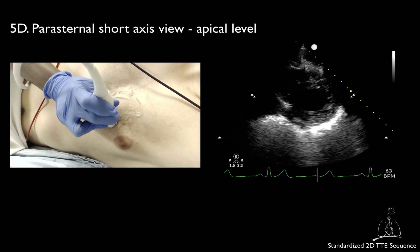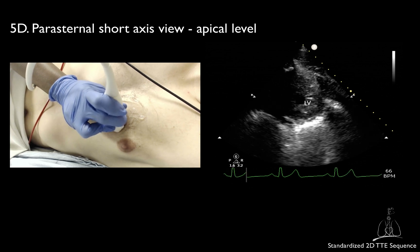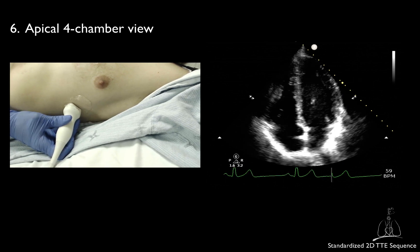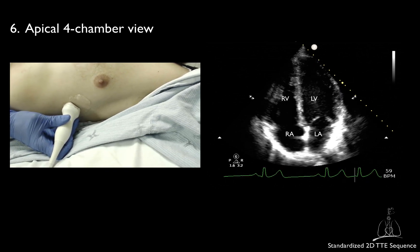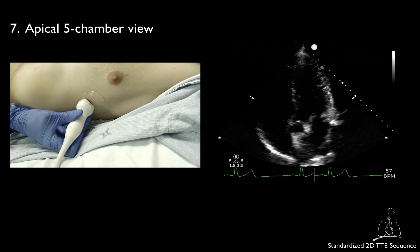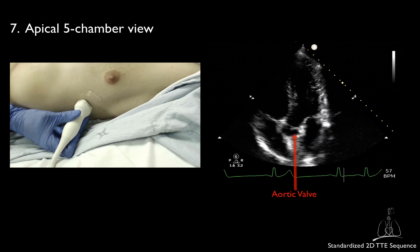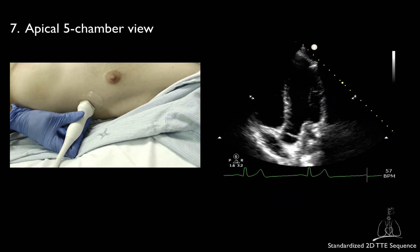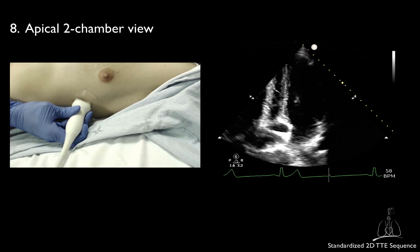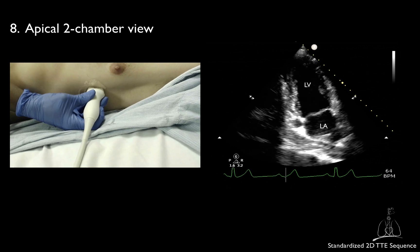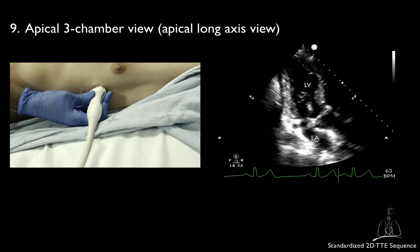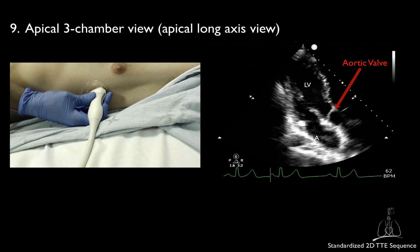And the parasternal short axis view at the apical level. After completing the parasternal views, you will move to the apical window starting with the apical 4 chamber view. From the apical 4 chamber view, you will then obtain the apical 5 chamber view. The next step will be to obtain the apical 2 chamber view. From this view, by increasing your rotation counter-clockwise, you will be able to obtain the apical 3 chamber view, also called the apical long axis view.